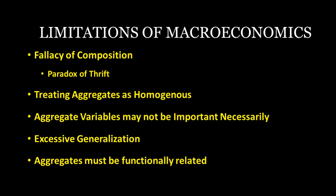The fifth limitation of macroeconomics is that aggregates must be functionally related. The aggregates must be significant and mutually consistent, and the variables should be functionally related to one another.